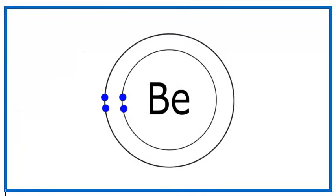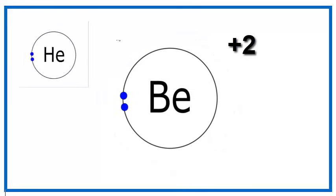In a similar sense, beryllium will lose two electrons in its outer shell, and once they're gone, it has the same configuration as the noble gas helium.